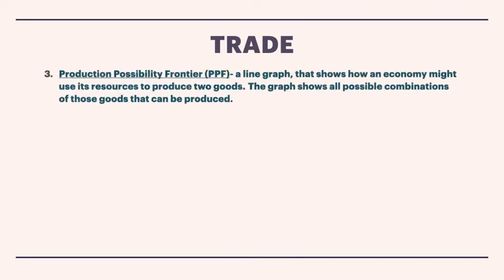A model that economists use to show trade-offs and how much you might be able to make of something in comparison to making something else is called a production possibility frontier, or a PPF. A production possibility frontier is a line graph that basically shows how you could use your resources to make two different goods, showing all the different combinations on a line of how those goods might be produced.